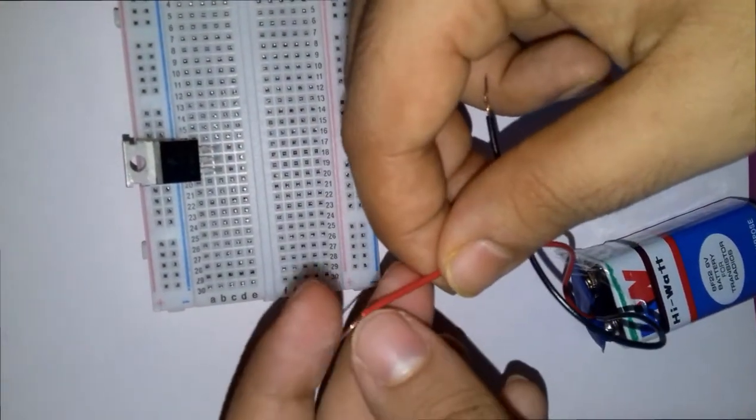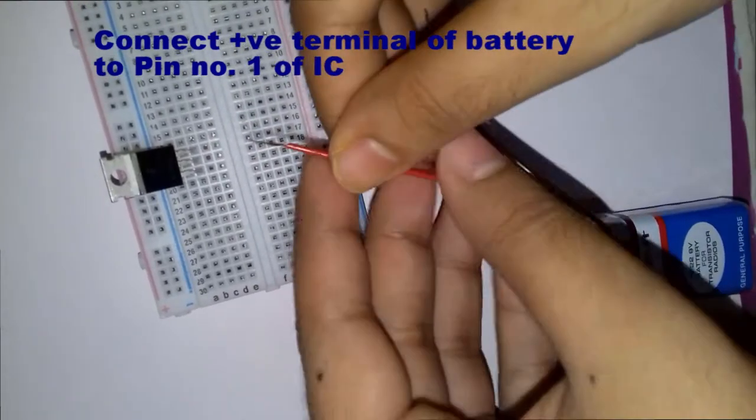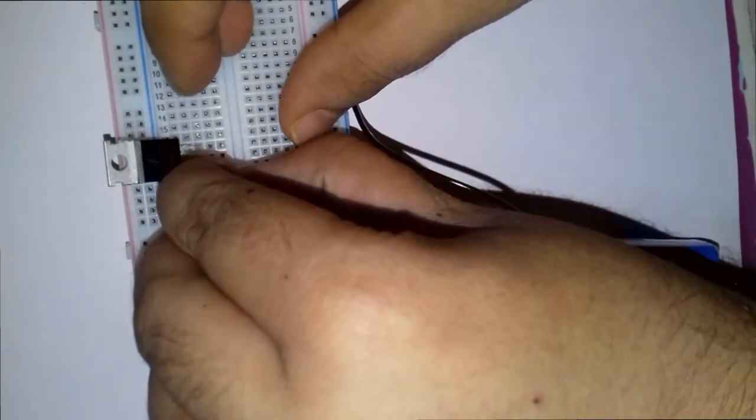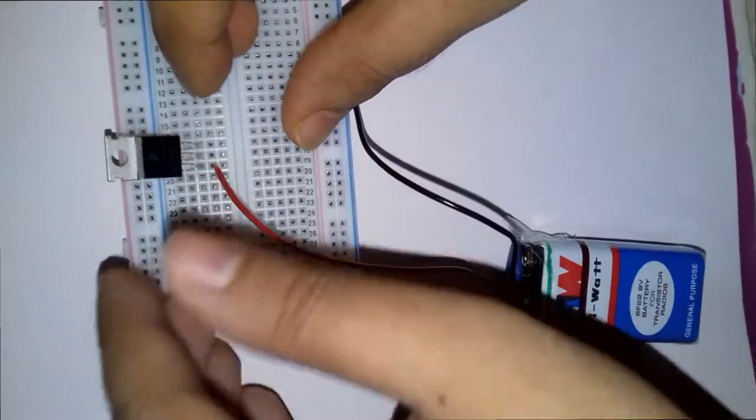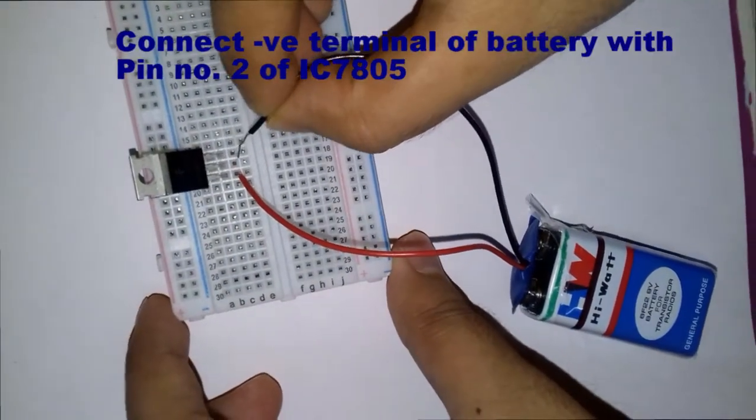Now we are giving input to the IC7805 to pin number one. We are connecting the ground to pin number two.